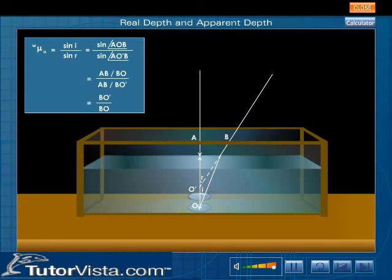From Snell's law we have B is very close to the point A. Hence, BO' is approximately equal to AO'. AO' is the apparent depth.